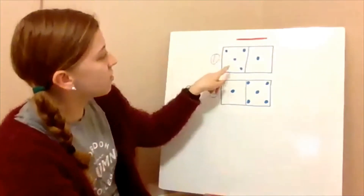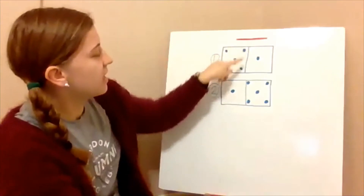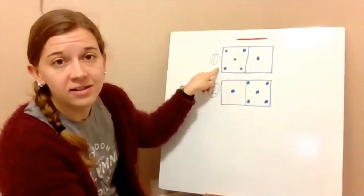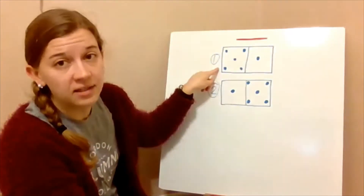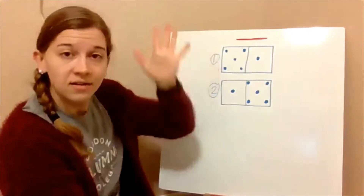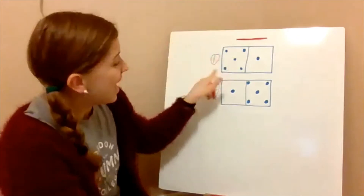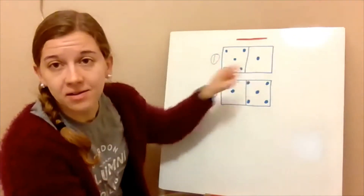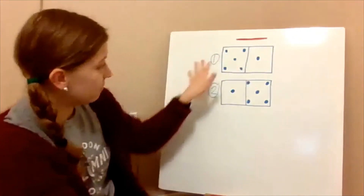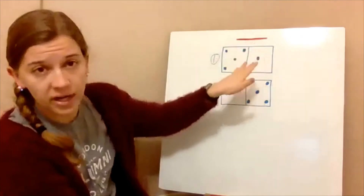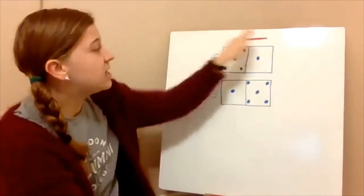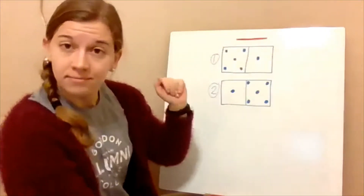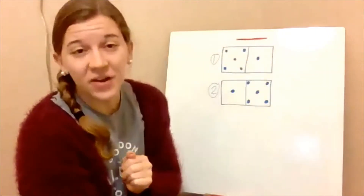For domino number one, how many are on the left side? How many dots? Five. And how many dots are on the right side? One. Five and one. And how many dots are there in all? Six.